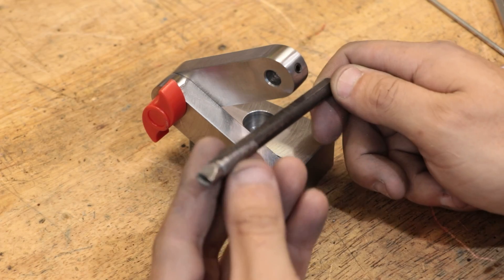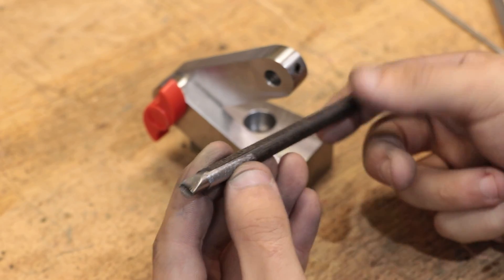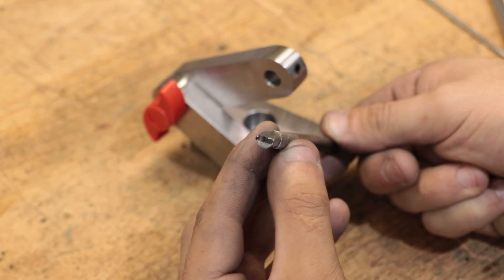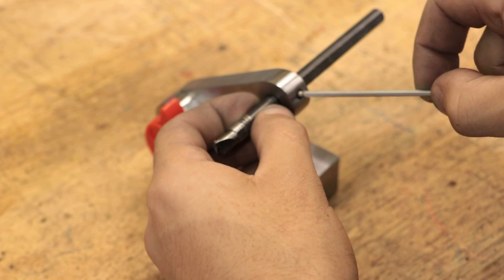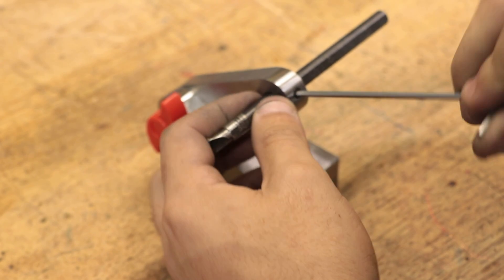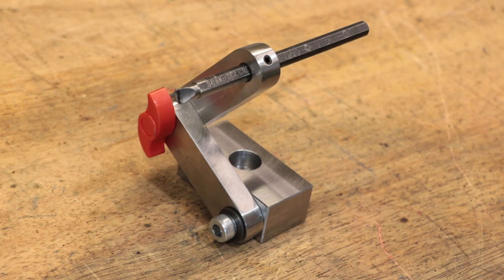And to act as our adjustable stop, I'll be using this old boring bar that broke. So far I'm pretty happy with it, and I could probably bolt it to the mill and then call it a day.